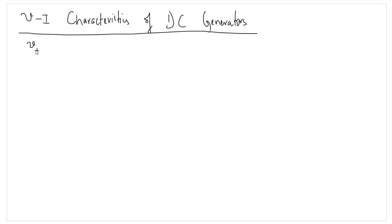Simply stated, the VI characteristics is the plot of terminal voltage — that is the voltage available to us at the output terminals of the generator — versus the load armature current. We have derived four different equations for VT for the four types of DC generators.